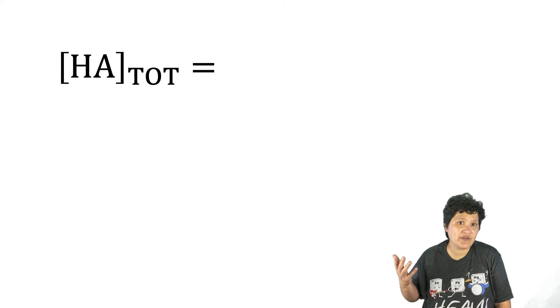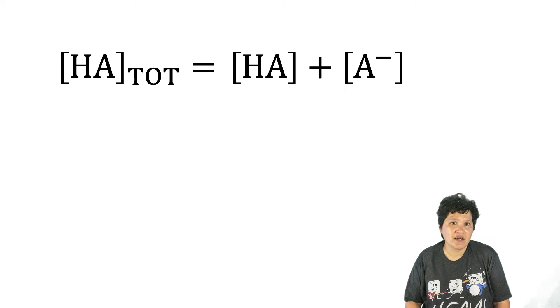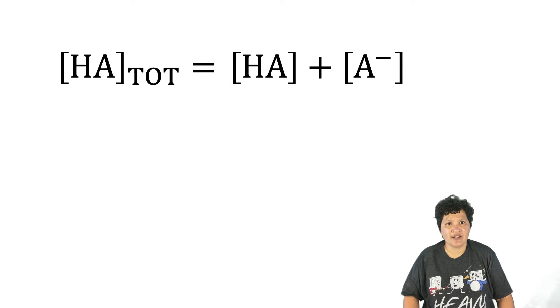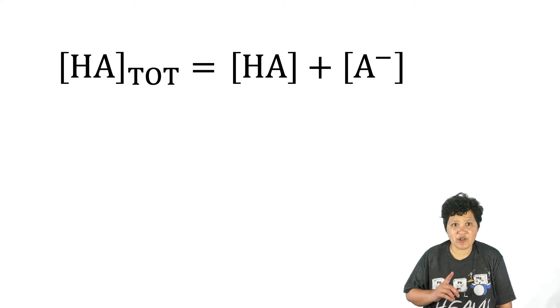Again, the definition of fractional composition is what fraction of the total acid that the species you're looking at comprises. A monoprotic acid can either be in the A- form or the HA form. So the total amount of acid, which we're going to write like this, will be the amount you have of A- plus the amount you have of HA. Note that we're always going to be working in molarities in my class.